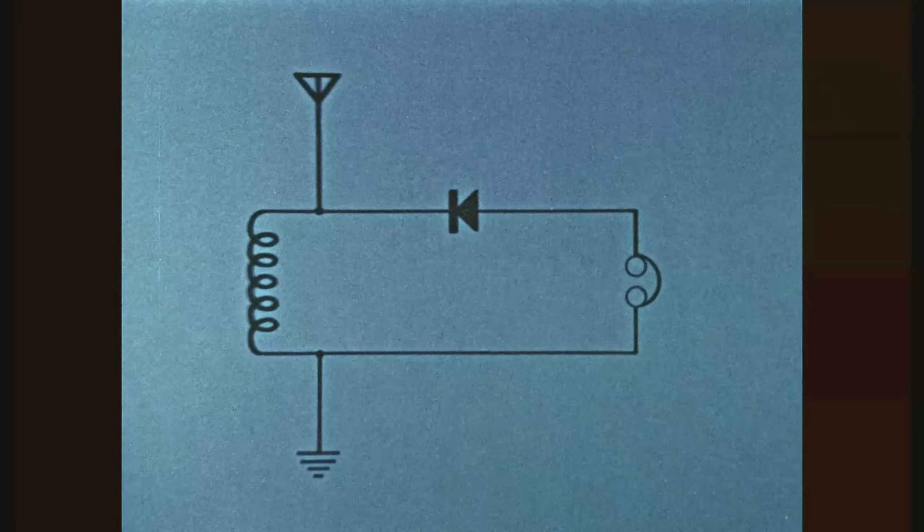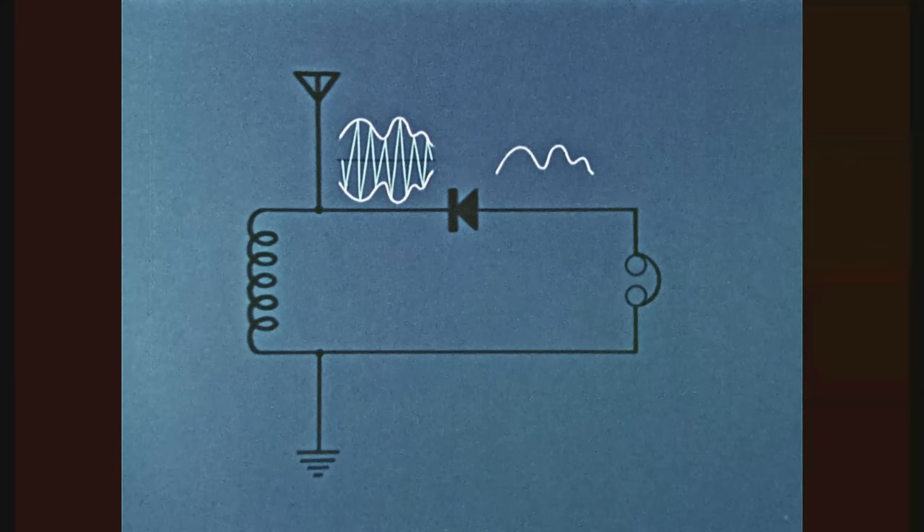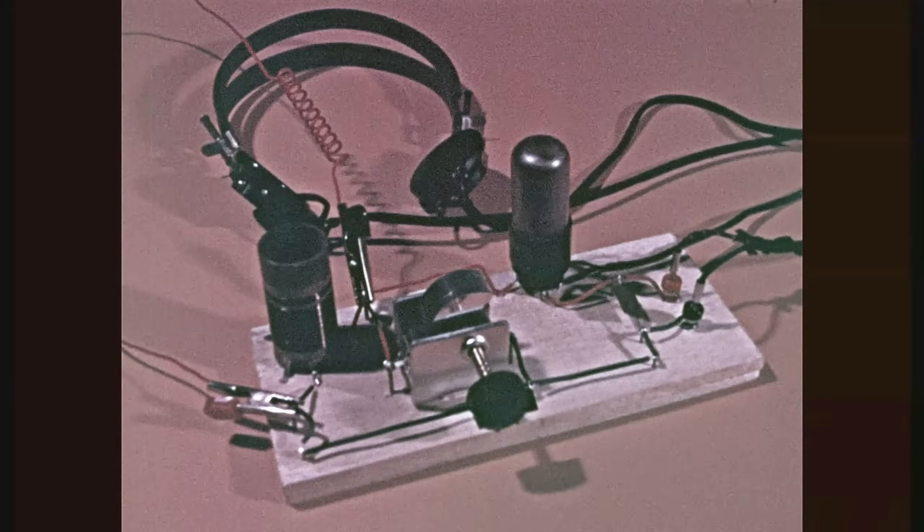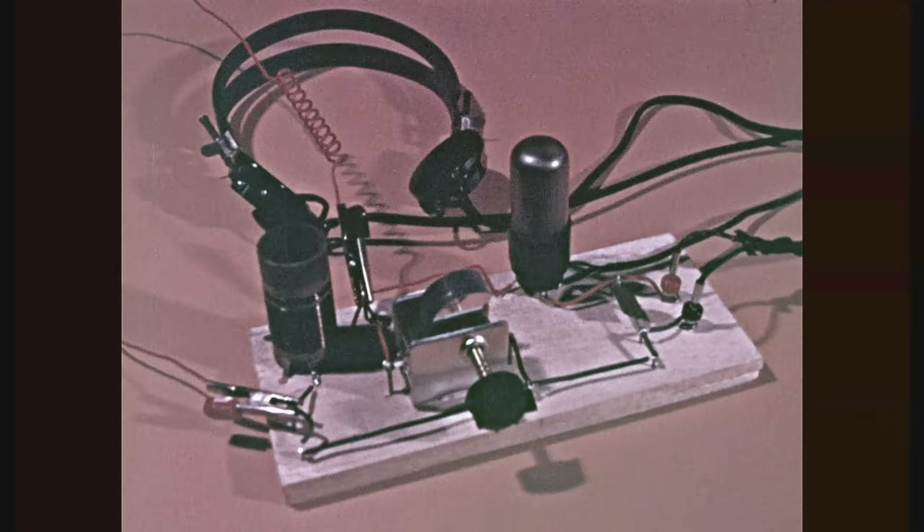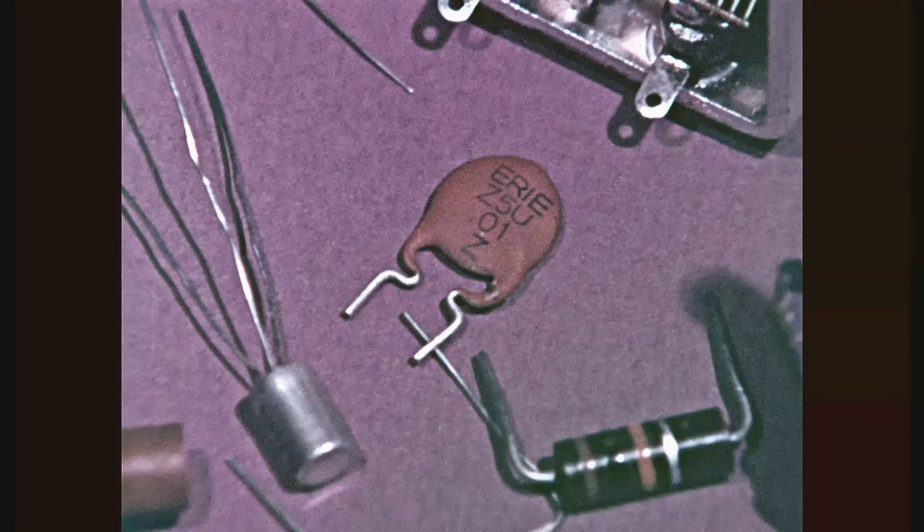This partially restored educational film from 1971 provides an introductory explanation of basic radio circuitry that helps demystify the fundamental technologies underlying everyday radio, including wave transmission and basic components of simple radio circuits and the role of vacuum tubes, transistors, capacitors and other elements.